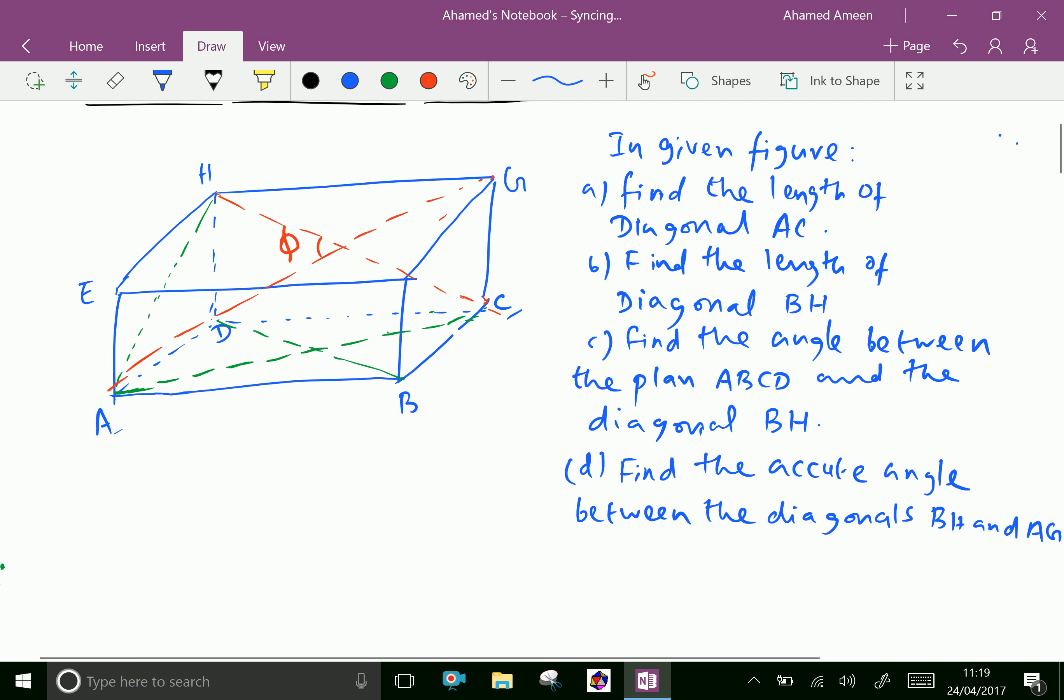c) Find the angle between the plane ABCD, that is the base of the box, and the diagonal BH. d) Find the acute angle between the diagonals BH and AG.